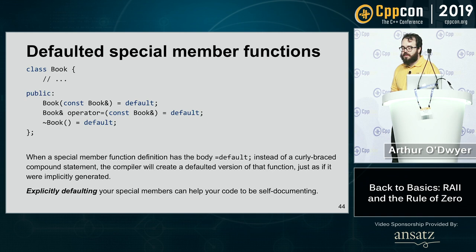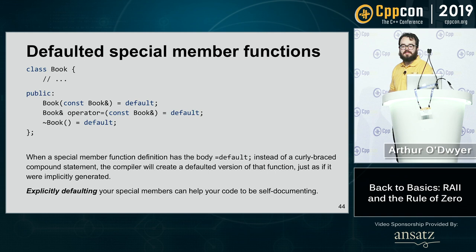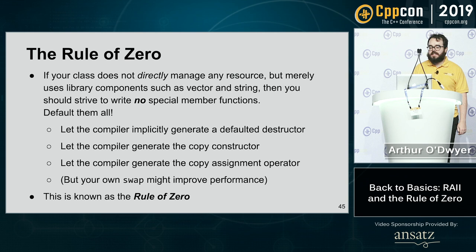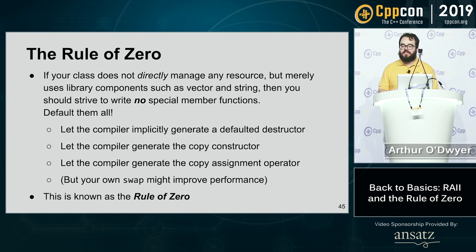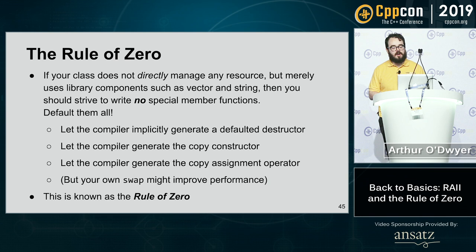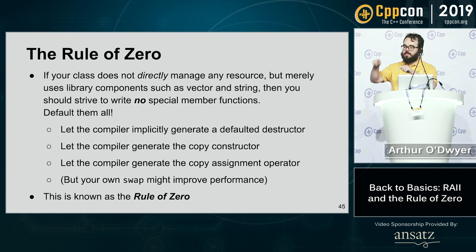The ability to default special members leads us to the Rule of Zero. If your class does not directly manage any resource, but instead uses library components such as std::vector and std::string, then you should strive to write no special member functions at all — default them all. Let the compiler generate your destructor, copy constructor, and copy assignment operator. You might write your own swap, since there's no way to default a swap.